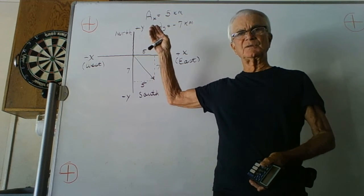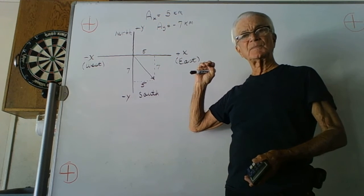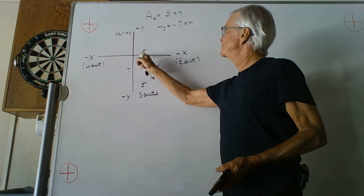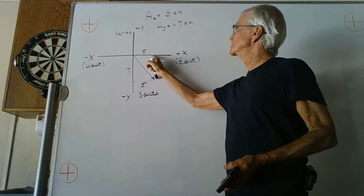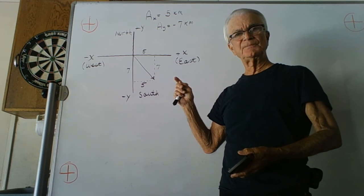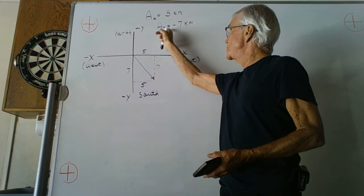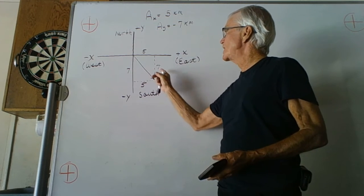I show the components: a_x is five kilometers, that's five kilometers to the east, then turn south and travel for seven kilometers in the negative y direction, so the y component is seven kilometers.